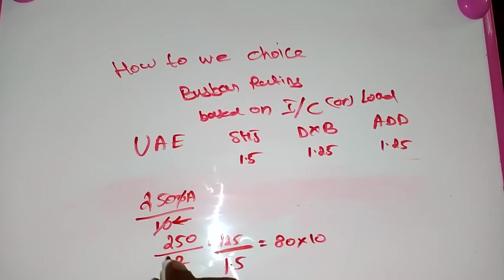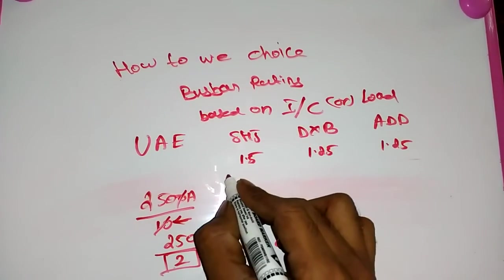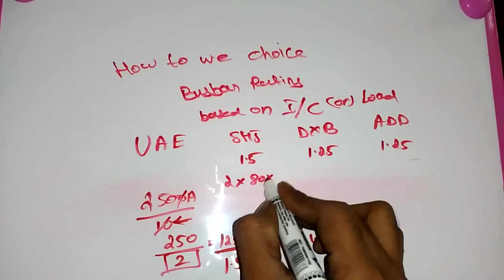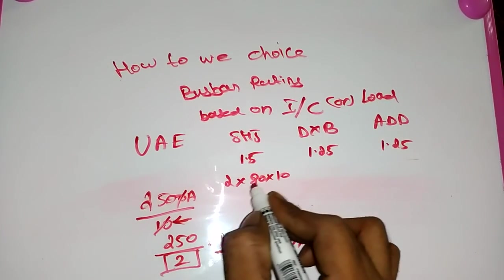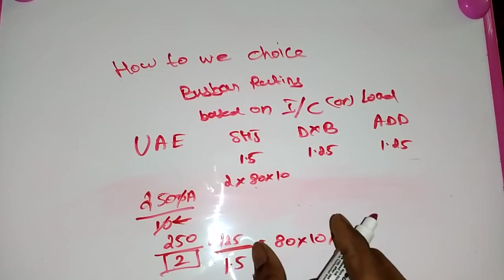This is the final thickness of the busbar. Then 10mm we already divided by 10mm, then we choose for 2 into 80 into 10, 80 by 10 busbar in two numbers we use for this case.